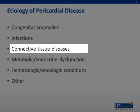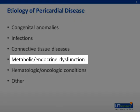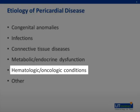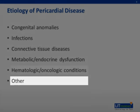Additional categories include connective tissue diseases such as rheumatoid arthritis, rheumatic fever, systemic lupus erythematosus, systemic sclerosis, and sarcoidosis; metabolic and endocrine dysfunction including uremia, hypothyroidism, and chylopericardium; hematologic and oncologic conditions like bleeding diatheses, primary or metastatic malignancy, or radiotherapy; and other factors like penetrating or blunt trauma, catheter-related iatrogenesis, post-pericardiotomy syndrome following cardiac surgery, aortic dissection, and idiopathic causes.